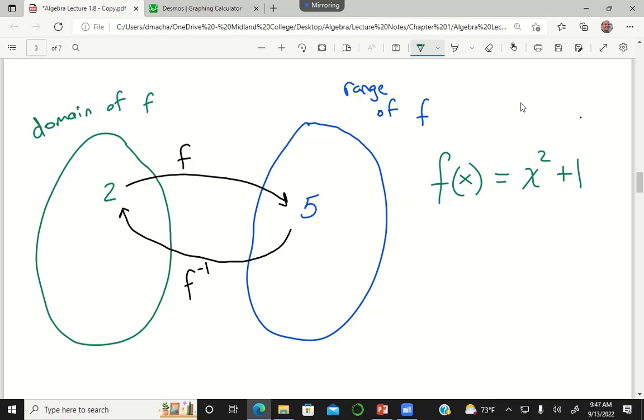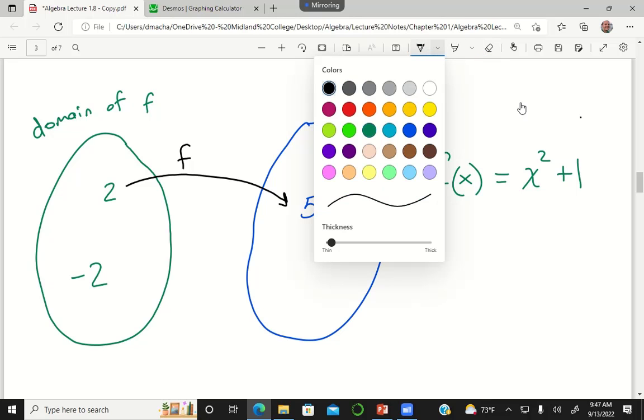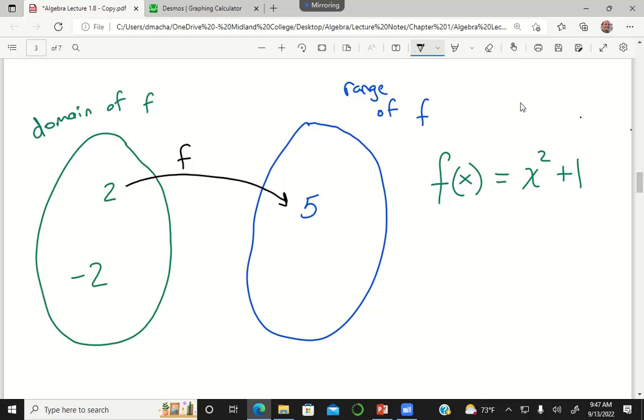But what about if I had negative 2? If I did negative 2 squared plus 1, what would that map to? 5, yeah. Negative 2 squared plus 1 is still 5, so my function f maps both 2 and negative 2 to 5.